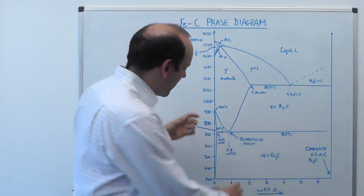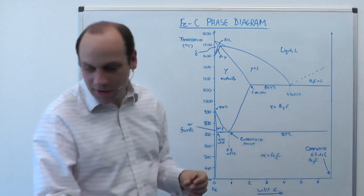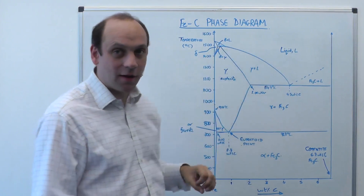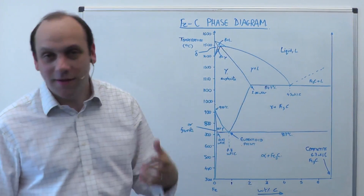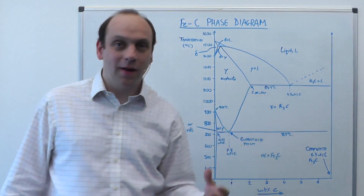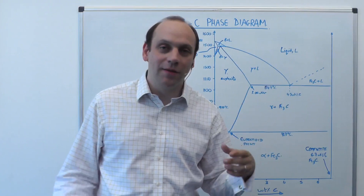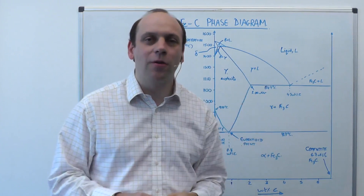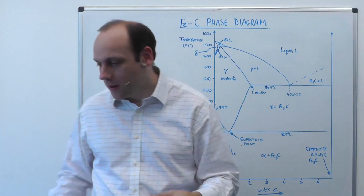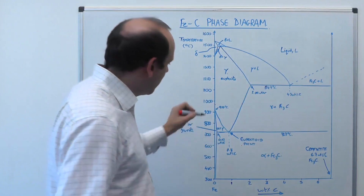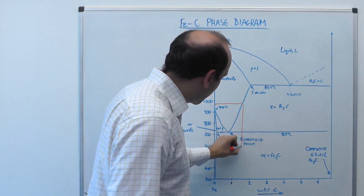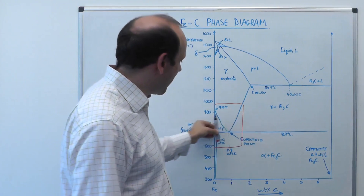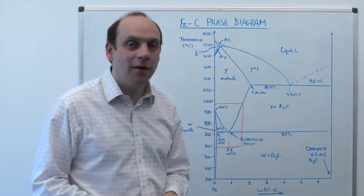Those phase regions will typically be at carbon contents less than two weight percent carbon. Most steels will have entered the pure austenite regime and remained there long enough to form homogeneous, that is even-composition, austenite grains. So mostly we're going to consider only this region of the phase diagram — from about 600°C up to about 1000°C and up to about one and a half weight percent carbon.